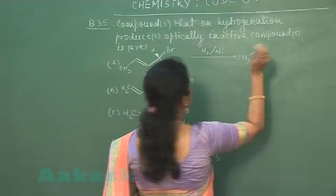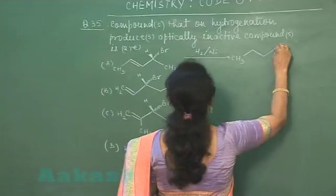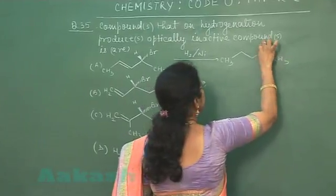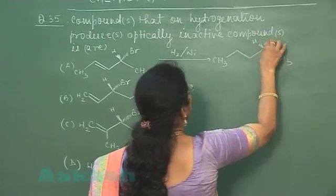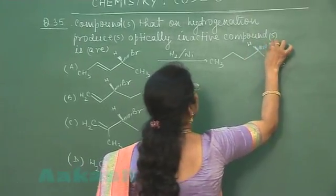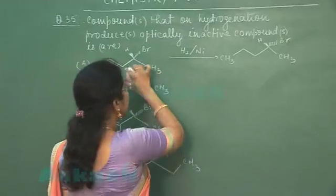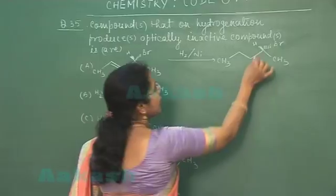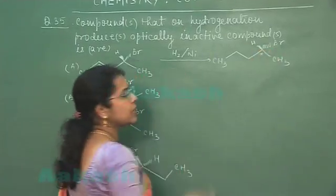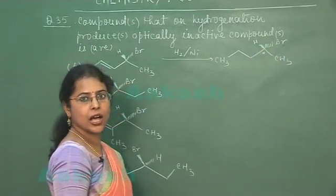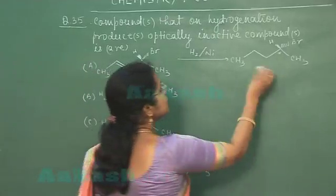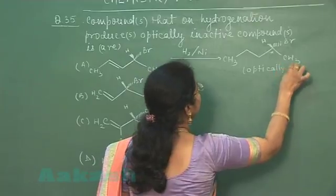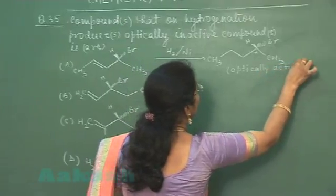If the first compound is given, after hydrogenation the double bond is converted into a single bond and immediately the carbon atom becomes a chiral carbon atom. So in this case, the product is a chiral, optically active compound.